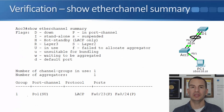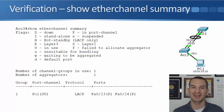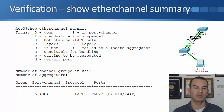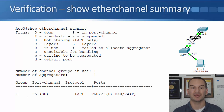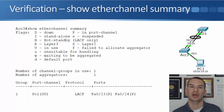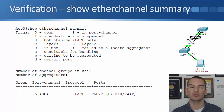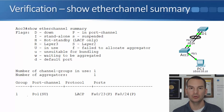For verification, the Swiss Army knife command for checking EtherChannel is 'show etherchannel summary'. It shows flags explaining what each letter means. Looking at the output, we can see group 1 with port channel interface port-channel 1. In brackets there's a capital S, meaning it's a layer 2 port channel, and a capital U, meaning it's in use and up. You can also configure a layer 3 port channel by using 'no switchport' and assigning an IP address, but layer 2 is more common.